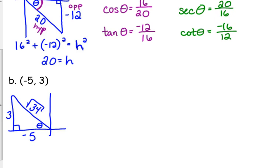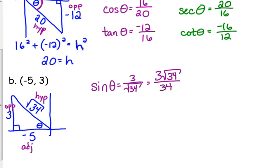So in this case, the negative 5 is the adjacent side. The 3 is the opposite. And the square root of 34 is our hypotenuse. So sine of theta is equal to the opposite over the hypotenuse. If you want that in rational form, 3 times the square root of 34 over 34. I'm fine with either one.